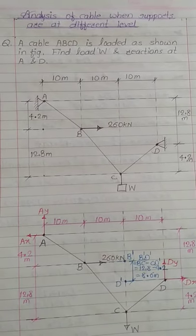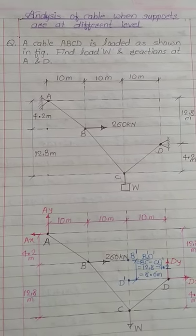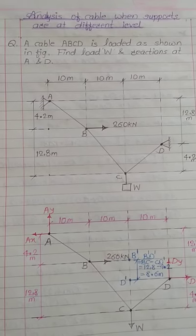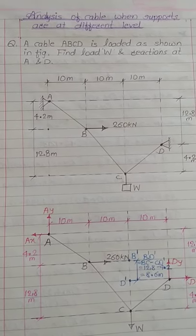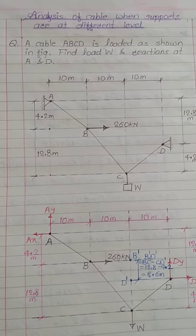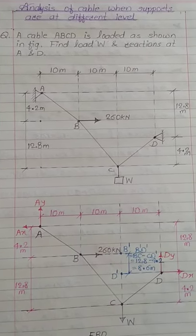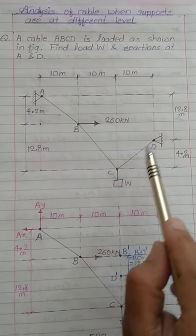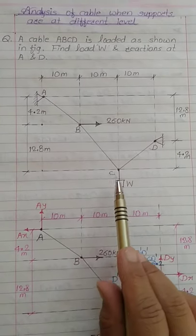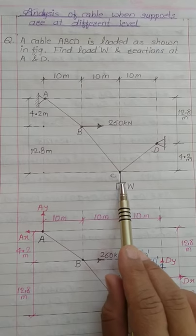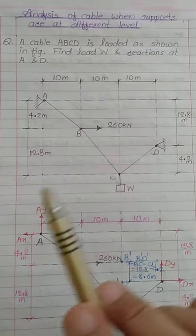Hello everyone. In this video we will see how to analyze the cable when the supports are at different levels — they are not placed at the same level. We will see a numerical: a cable ABCD is loaded as shown in the figure, and for this system we have to find load W and reactions at point A and D.